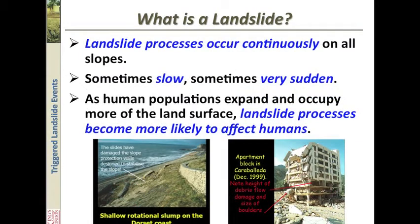Landslide processes occur continuously on all slopes. That means they go from very, very slow — that's called soil creep — to very quick, things like debris flows that can go at tens of kilometers per hour.